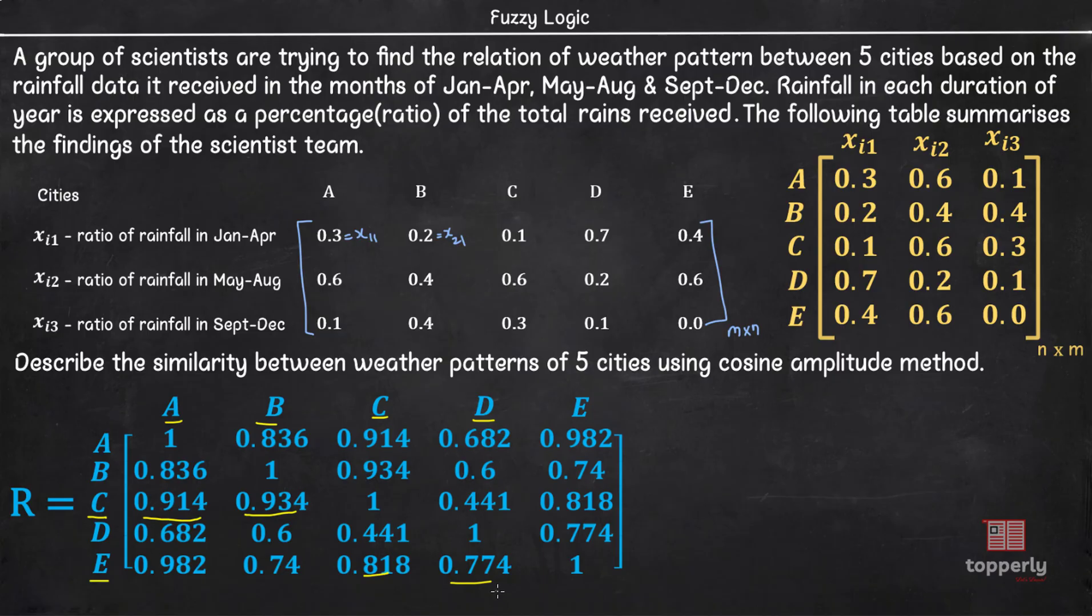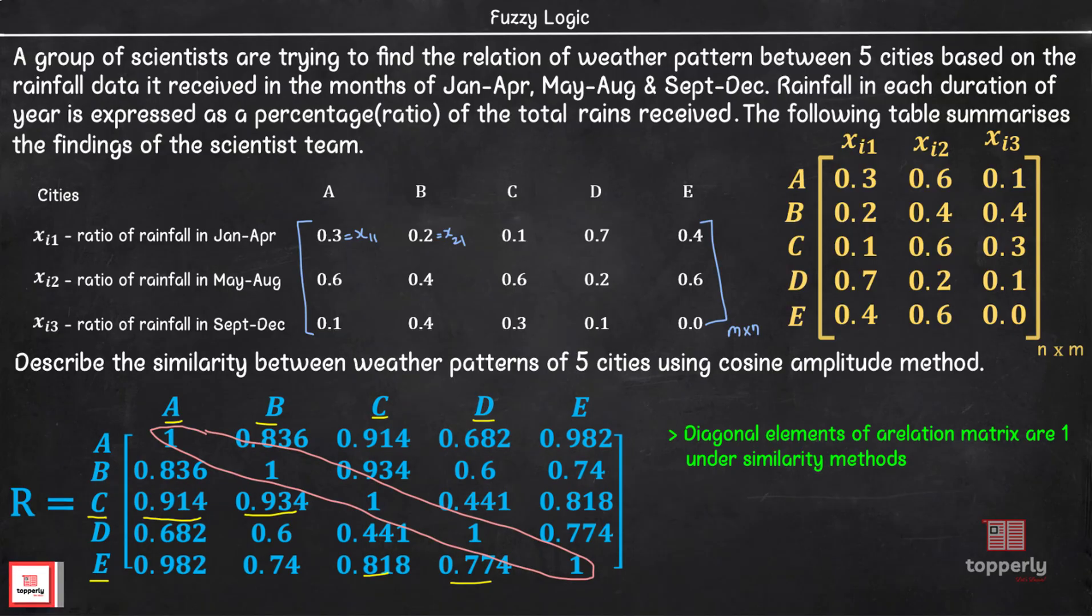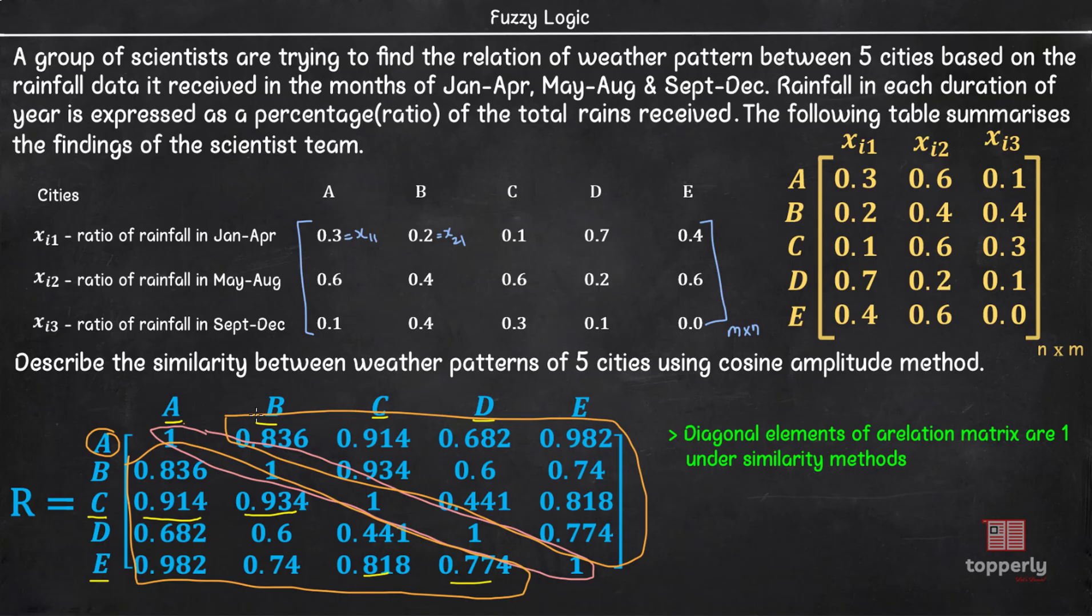There are some other interesting factors too. If you see, all the diagonal elements here are 1. This is because every city is completely similar to itself. Also you will see that diagonally opposite elements are the same. This is because the relation between city A and city C is the same as the relation between city C and city A. Hence, you only need to calculate the values for one side of the diagonal. You can get the other values using these properties.